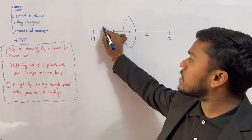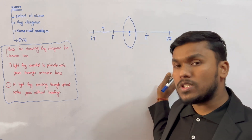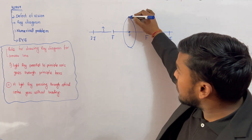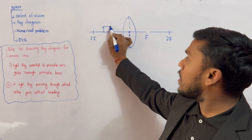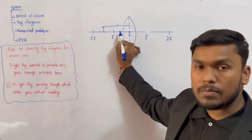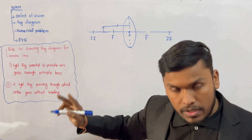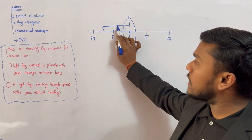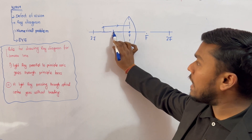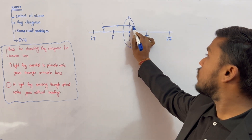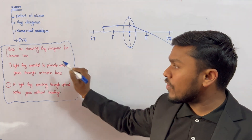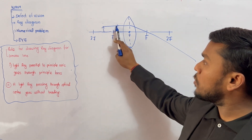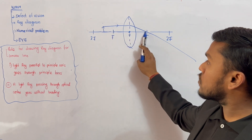For example, f or 2f — the image can be made at different points. Rules make accurate ray diagrams. In order to know the problem: the light parallel to the principal axis goes through the principal focus. The light parallel to the principal axis goes through the principal focus.